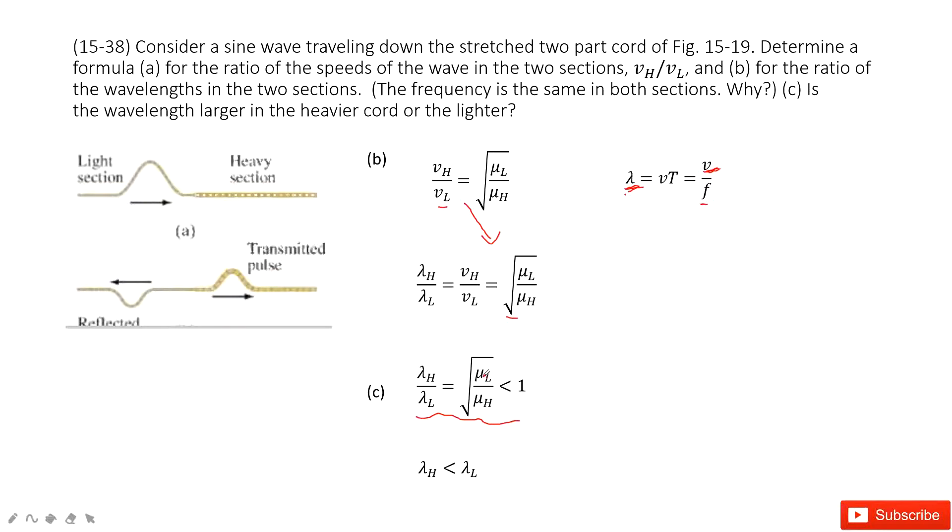The light one, of course, mu L is smaller than mu H because this is heavy and this is light. So for linear density, mu L is smaller than mu H, which makes this ratio smaller than 1.